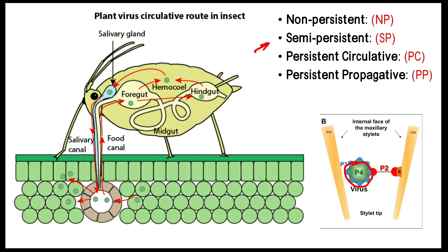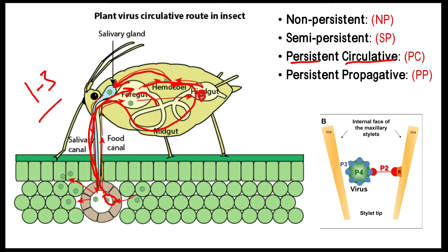In persistent circulative relationship, the plant virus goes with the food into the foregut, then moves to the midgut and hindgut, after which the virus goes into the insect's hemocoel — the hemocoel is like the insect's blood. From the hemocoel it moves to the salivary gland. When the insect then feeds on another plant, the virus transmits to the new host through the secretion of the salivary gland. This whole process takes time — one to three days — this time is called the latent period. So in persistent circulative relationship, there is a latent period of one to three days.